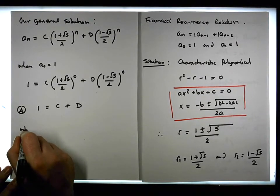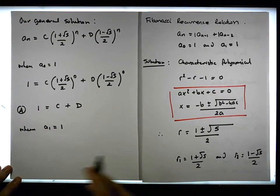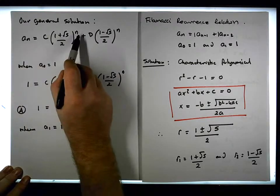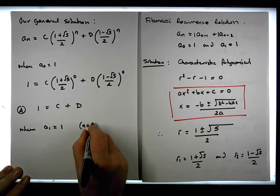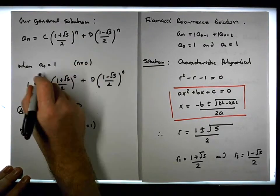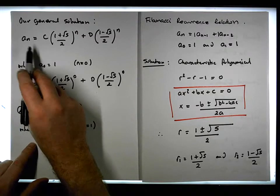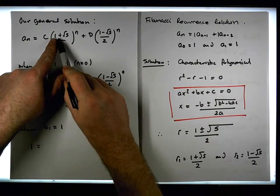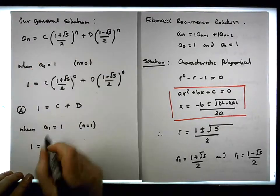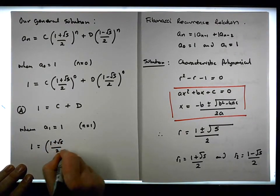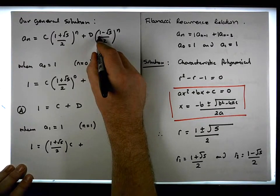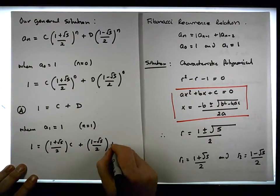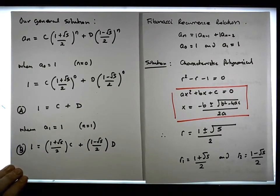When a1 = 1, we evaluate at n = 1. So 1 must equal (1 + √5)/2 raised to the power of 1 times c, giving us (1 + √5)/2 · c, plus (1 - √5)/2 raised to the power of 1 times d, giving us (1 - √5)/2 · d. This is our second equation.